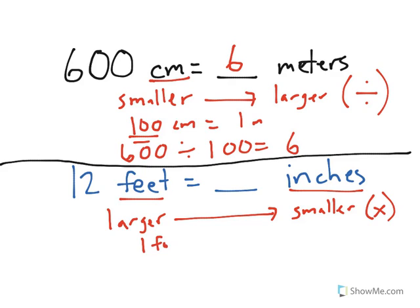Well, 1 foot is equal to 12 inches. Here's where knowing your measurement conversions comes in handy. So our problem is now 12 multiply times 12. 12 times 12 is 144 for the correct answer.